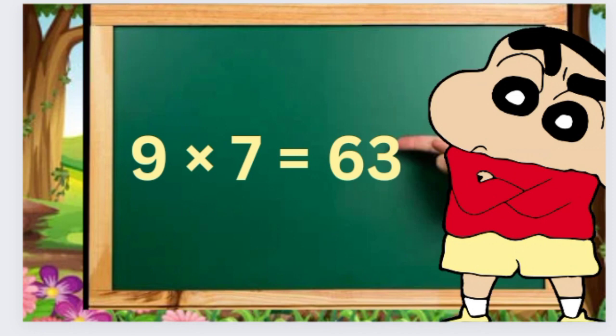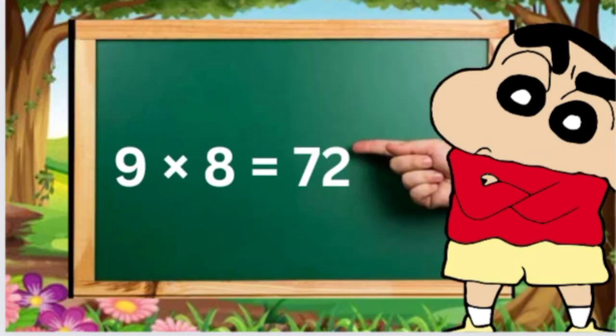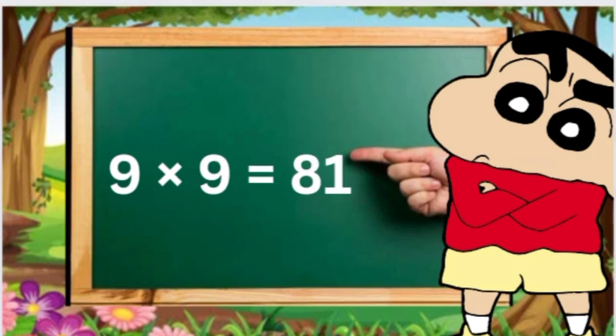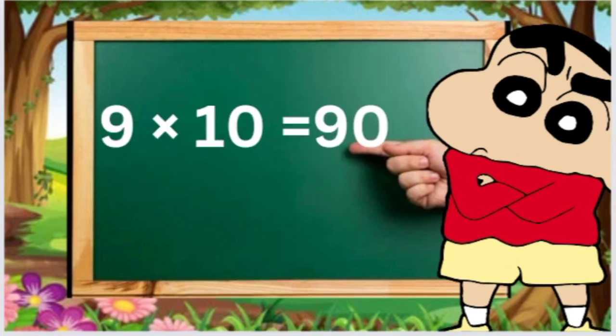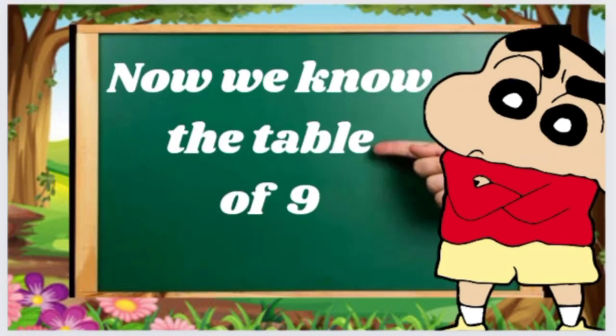Nine sevens are sixty-three, nine eights are seventy-two, nine nines are eighty-one, nine tens are ninety. Now we know the table of nine.